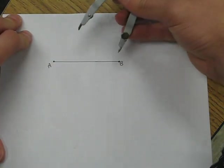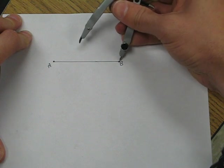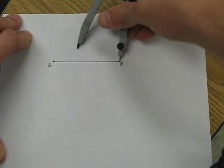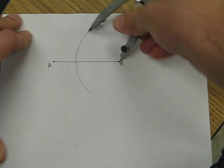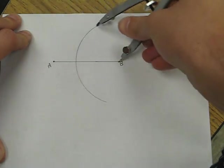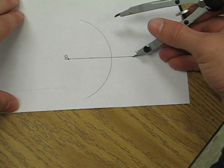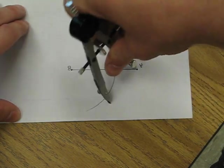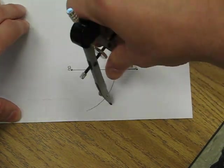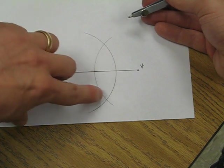We're going to use this radius for an arc that passes like so. Now you might want to make it kind of long because we're going to do the same thing from the other endpoint of the segment. The same arc. And what you're wanting to happen is these two arcs to cross each other.